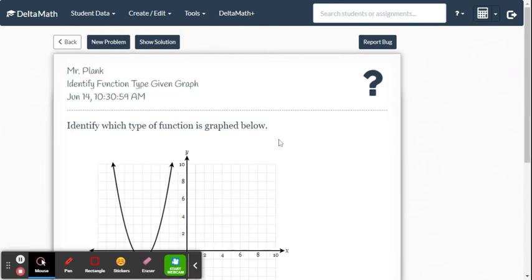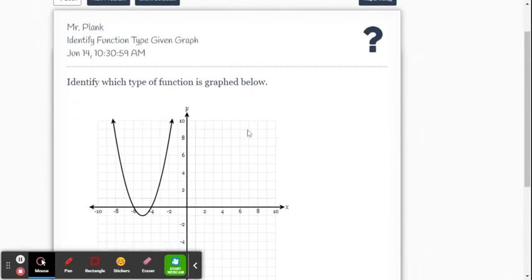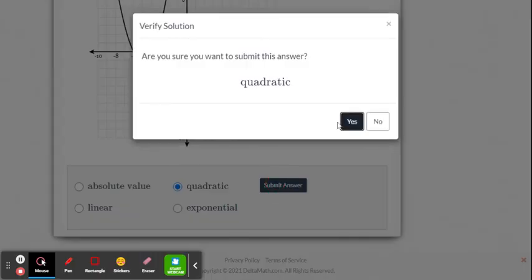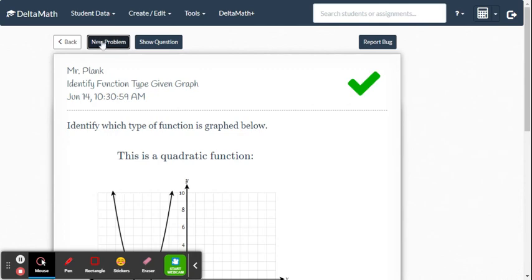So that's it for DeltaMath here. All you do is you just keep on clicking on new problem. You put in the answer. This one's a parabola. So now it's a quadratic. Submit the answer. Tells you you're right. You want another one.